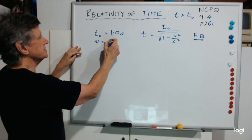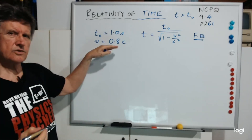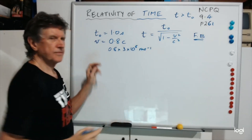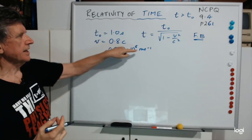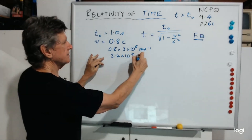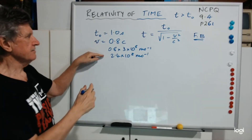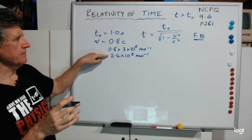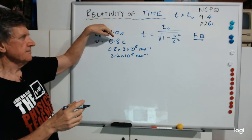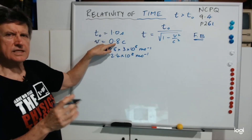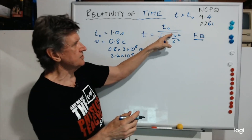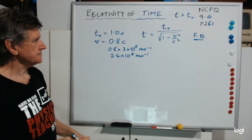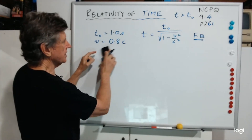Let's say V is 0.8C — that is, 0.8 times 3×10⁸ meters per second, which is 2.4×10⁸ m/s. You could be given speed V as a number in meters per second, or as a value of C. We'll stick to values of C — if you had it as meters per second, you'd just substitute that number squared over C squared, which is (3×10⁸)².